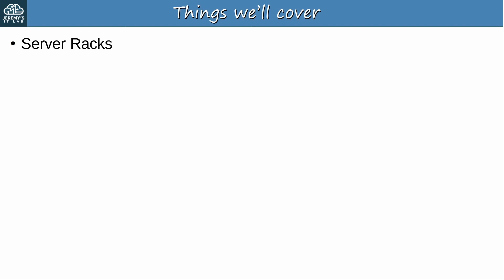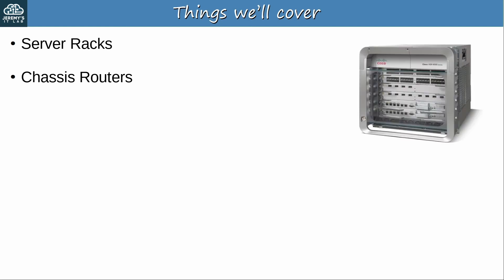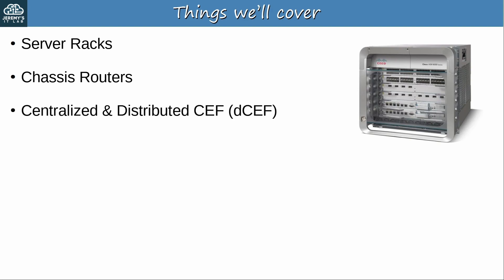Here's what we'll cover in this video. First we'll take a brief look at server racks. This isn't directly related to distributed CEF, but it is related to the next topic, chassis routers. These are large routers which have many modular parts. Here's an example of a chassis router, a Cisco ASR9006 router. Finally, we'll look at centralized and distributed CEF. The basic functions of CEF are the same as we learned before, but CEF's implementation in chassis routers is a bit different because of the structure of chassis routers.